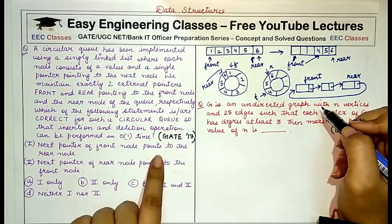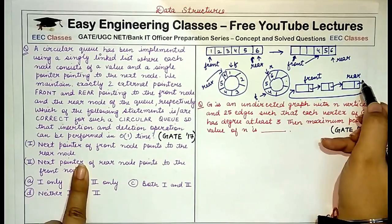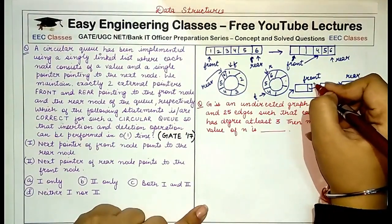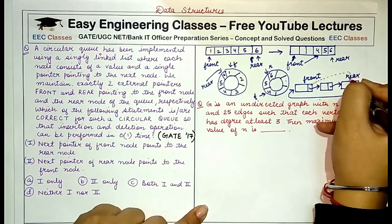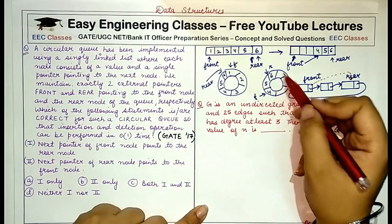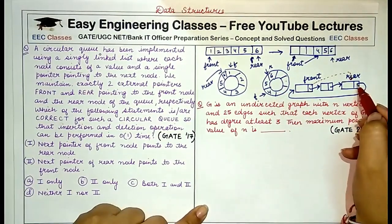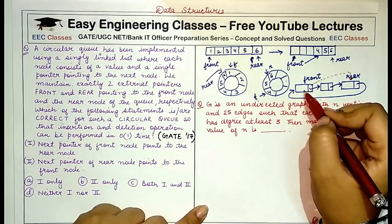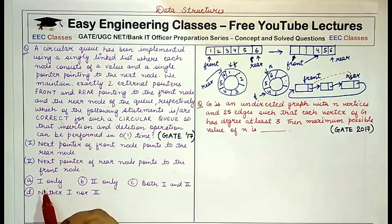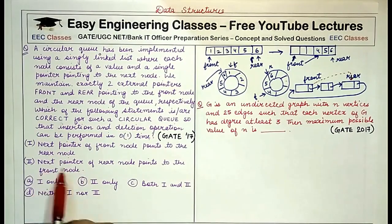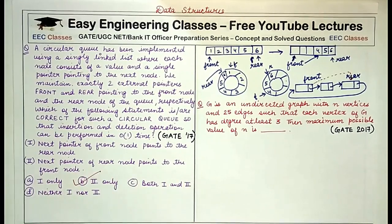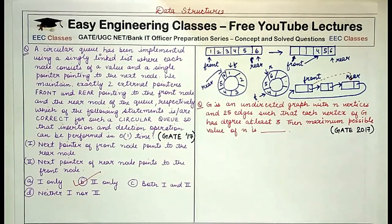There is no use in putting the next pointer of the front node to the rear node — if we do this, we would not be able to insert more elements at the rear end as in a circular queue. But if we add a pointer from the rear node to the front node, we would be able to insert new elements after deletions. So the correct statement is: the next pointer of the rear node points to the front node. Only the second option is correct, and answer B is the correct one.